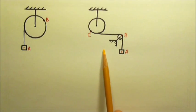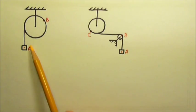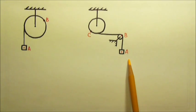How about these two? If the strings do not slip, do these points in each scenario have the same linear speed or the same angular speed?